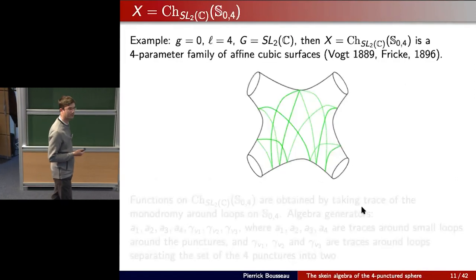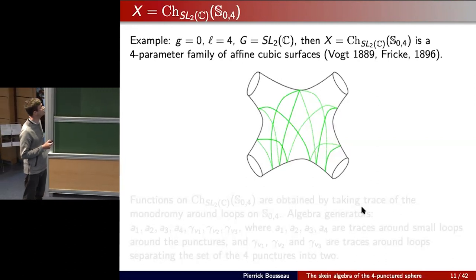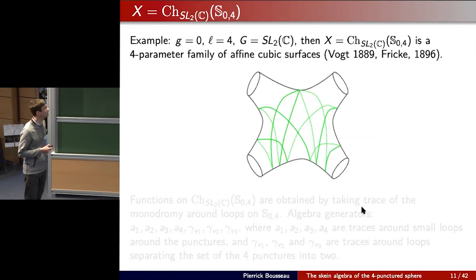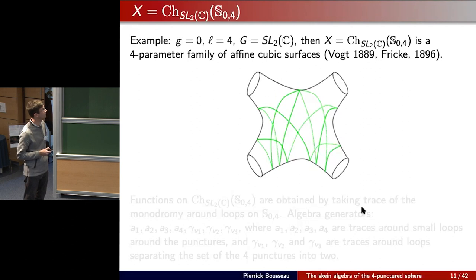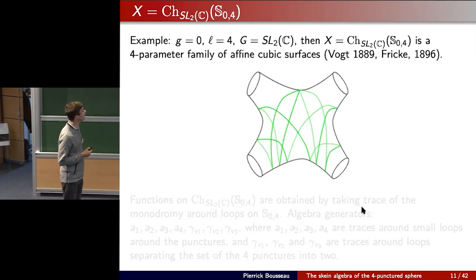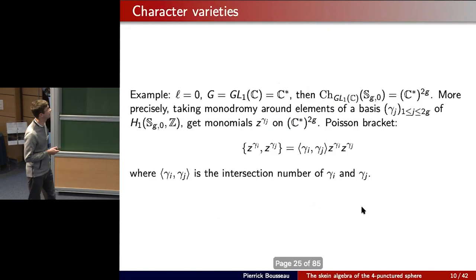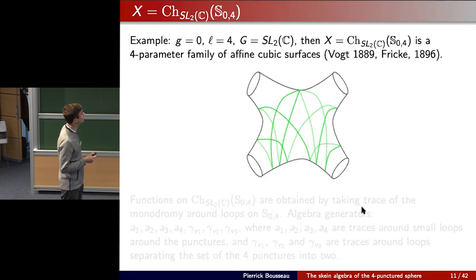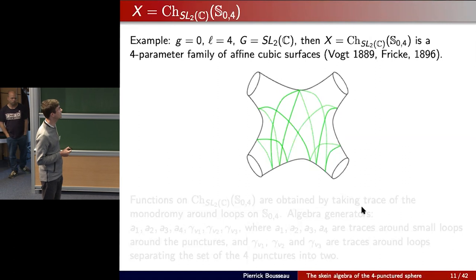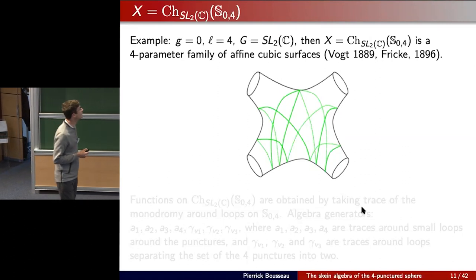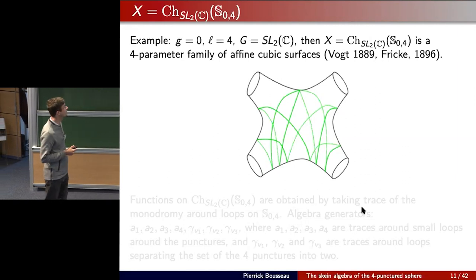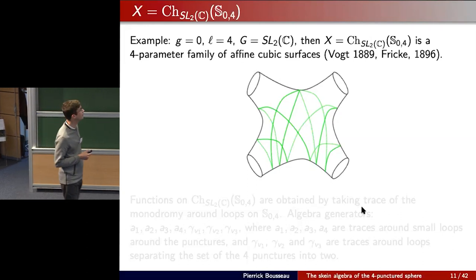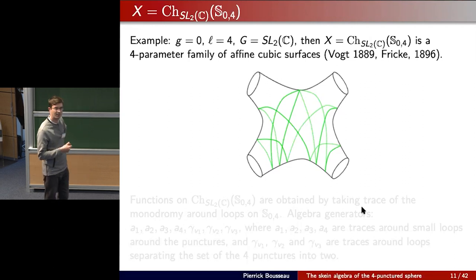A slightly more interesting example — the one we focus on in this talk — is g=0 and l=4: start with a topological sphere and remove four points. For the group G we take SL_2(ℂ). The corresponding character variety X, the SL_2(ℂ) character variety of the four-punctured sphere, is an object known since the end of the 19th century. It is known to be a four-parameter family of affine cubic surfaces: X has complex dimension 6 and is a family of surfaces depending on four parameters.